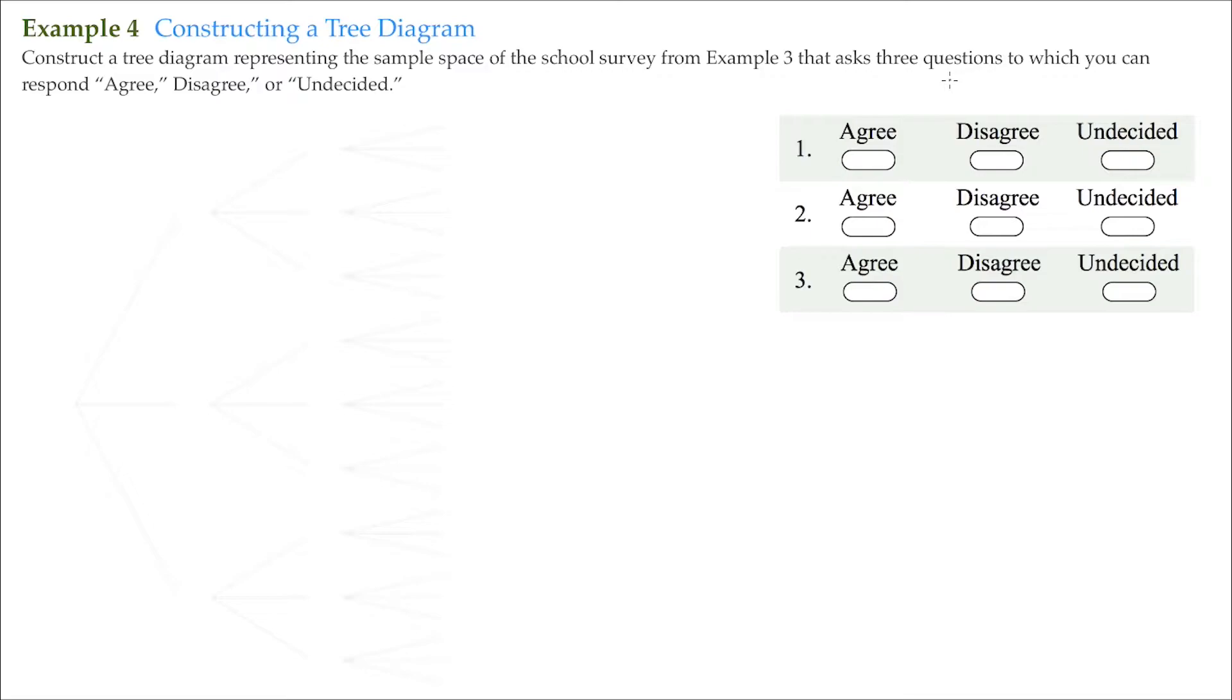And each one of the branches of the tree would represent some sort of action that may occur. So I'm going to put down here maybe the letter R for response, because we want to respond to these three questions. So you could see for the first question, obviously I have three possible responses: agree, disagree, and undecided.